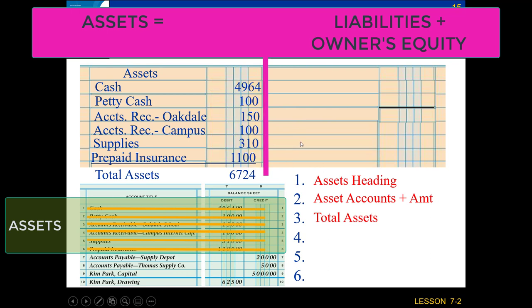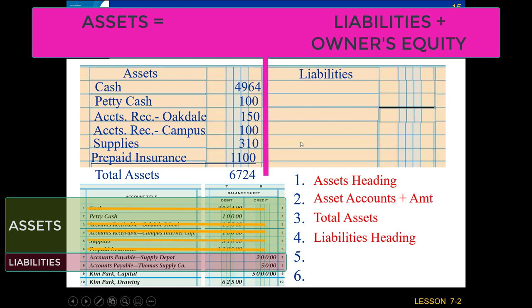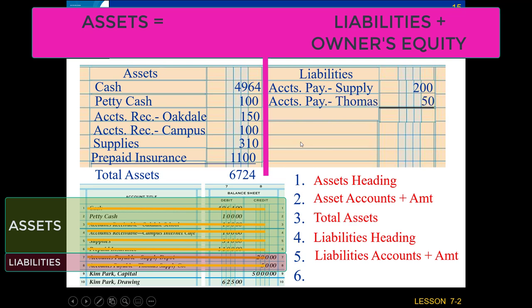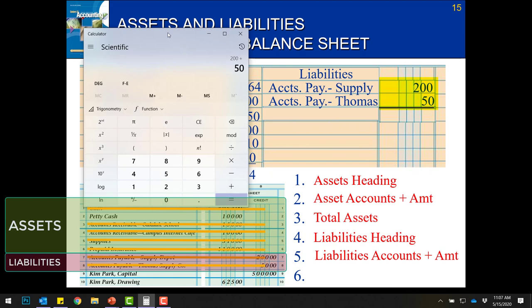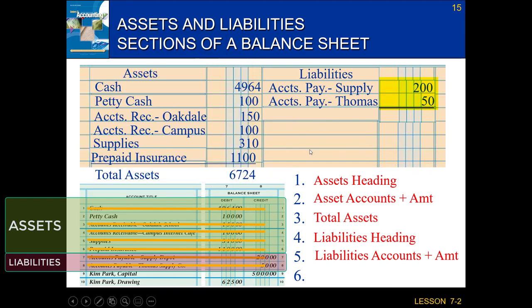Now that I'm done with the assets side, I move on to the right side with a liabilities heading. The same as I did with assets, I take the liability accounts and their amounts and drop them in listed in order: accounts payable to Supply Depot for $200 and accounts payable to Thomas Supply for $50. Then, just like I did with assets, I total up my liabilities — $200 plus $50 gives a total liabilities of $250.